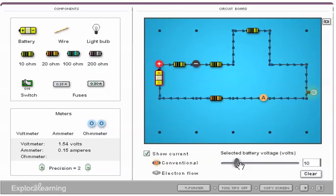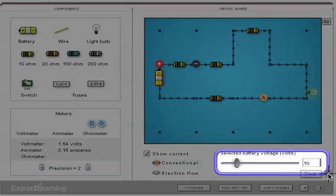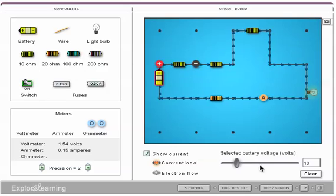If I click on the battery, I can adjust the battery voltage. The battery voltage is adjusted with the slider down here. So I can slide that up and down to adjust the battery voltage.